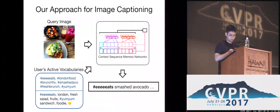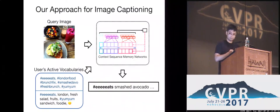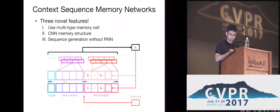In order to solve this problem, we also consider the user's active vocabularies. So we can generate captions with layer words such as hashtag eats and hashtag yum yum. We propose a novel captioning model named Context Sequence Memory Networks.